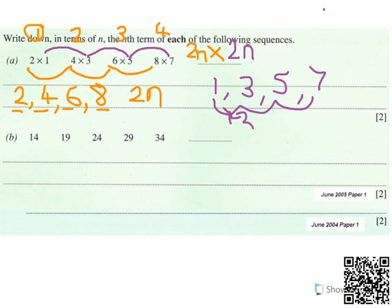But this is not the same sequence as the last one, because two times the first number in the sequence doesn't get me one. Two times one is not one; two times two is not three; two times three is not five. So the first term: two times one is two, but I need to get an answer of one. So I must have to do two n, and maybe take away one. Let's try: two times two is four, take away one gets me three. Two times three is six, take away one is five.